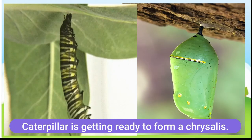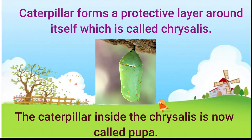The caterpillar forms a protective layer around itself, which is called the chrysalis, and rests inside it. The caterpillar inside the chrysalis is now called the pupa. This stage lasts for about two weeks.